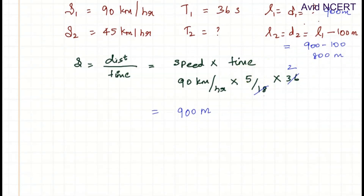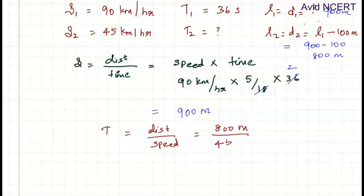Speed equals distance by time. Since we are finding time here, time equals distance by speed. Substituting the values: distance we know is 800 meters, divided by speed, which is 45 km per hour.